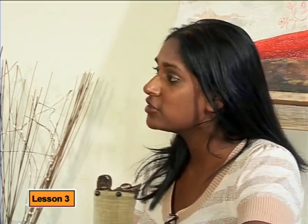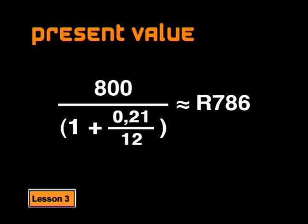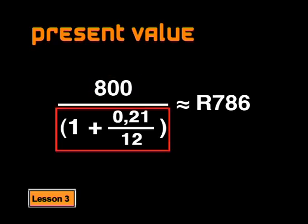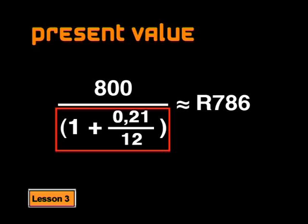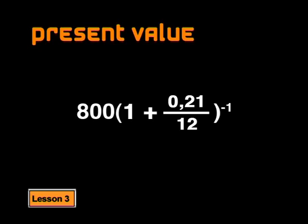That's right. By the end of one month, the amount owing would have increased by the rate of interest for that month. We can calculate the present value of the 800 rand paid in one month's time by dividing 800 rand by (1 plus the annual interest written as a decimal, divided by 12), because the interest is calculated monthly. So does that mean that the 800 rand is only worth about 786 rand now? Exactly - and we can write this expression in exponential form, where the denominator is written with an index or exponent of minus 1.